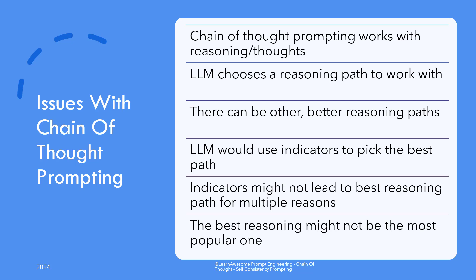In Chain of Thought Prompting, we forced the large language model to come up with a reasoning for the solution it was providing for our complex question. While this does improve the accuracy and results, anyone who has worked on complex logical problems or tasks knows that there are multiple ways of solving the same problem. You can always find someone who comes up with a better, optimal, more performant way of solving the same problem.